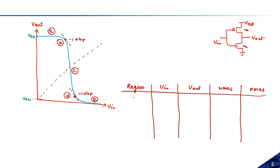Let me make a table with columns for region, VIN, VOUT, and status of NMOS and PMOS transistors. In Region A, the input is very low — less than VTH_N — so the NMOS transistor is in the cutoff region, the PMOS transistor is in the linear region, and the output equals VOH.